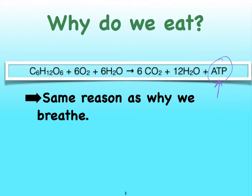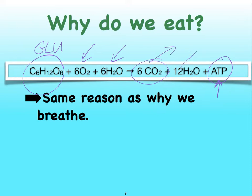So we ingest glucose — this is glucose right here — we breathe in oxygen along with some water vapor, and then of course we find that we produce some waste products: carbon dioxide, we again exhale some water vapor, but we also therefore form ATP. ATP is a molecule — adenosine triphosphate — that stores a lot of energy in those phosphate bonds.